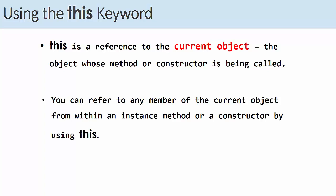You can use this to refer to any member of the object, any attribute, any variable or any method. Let's see some examples.